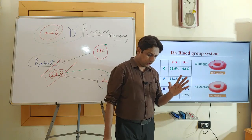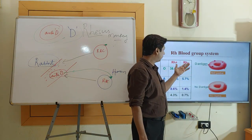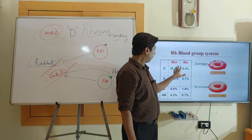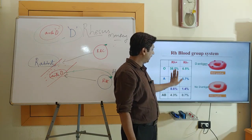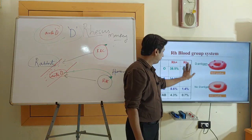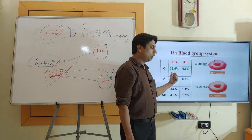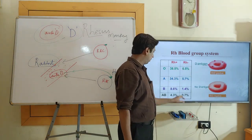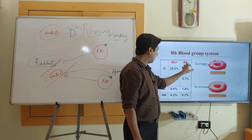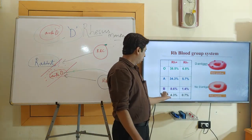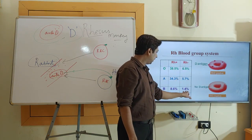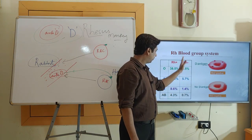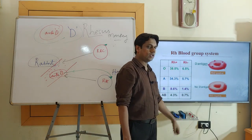Looking at the population distribution: O positive is about 38.5% and O negative 6.5%; A positive 34% and A negative 5.7%; B positive 8.6% and B negative 1.5%; AB positive 4.3% and AB negative 0.7%. It is clear that RH negative individuals are relatively fewer than RH positive.